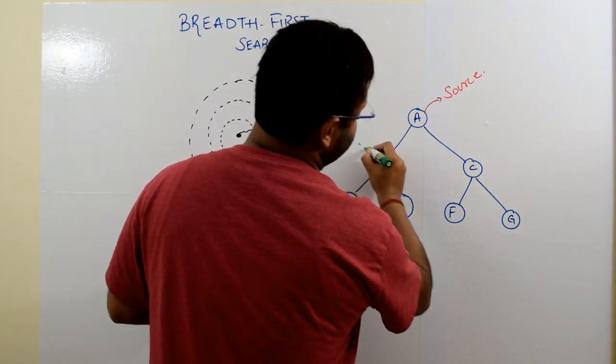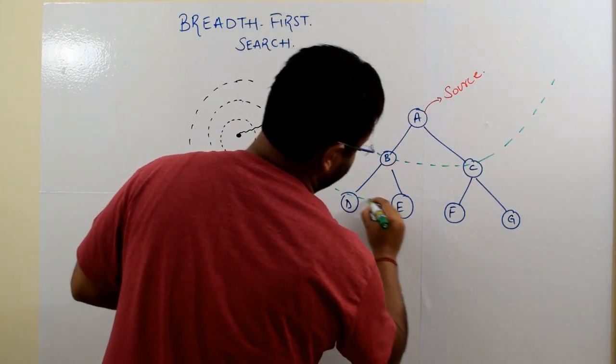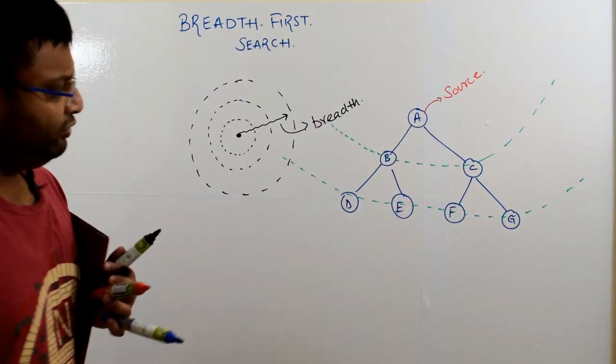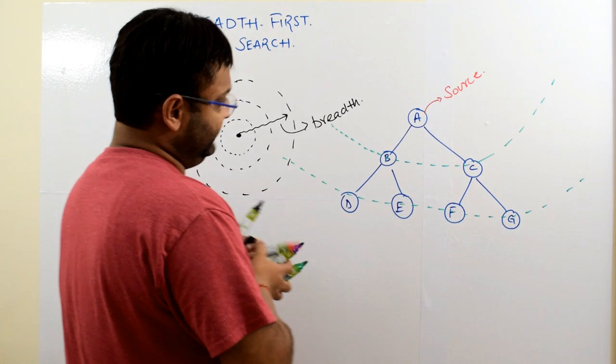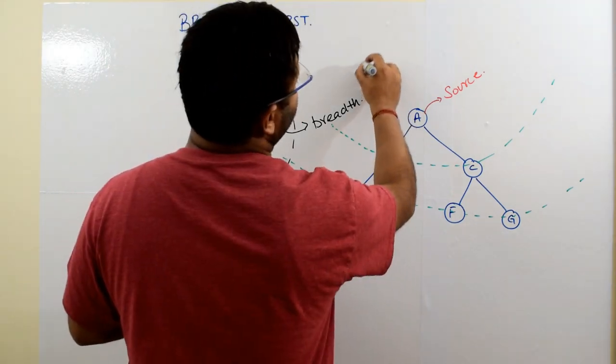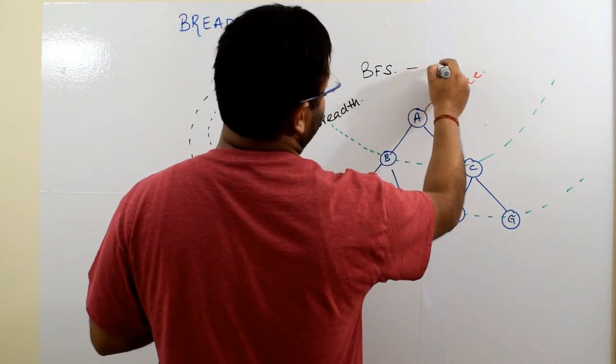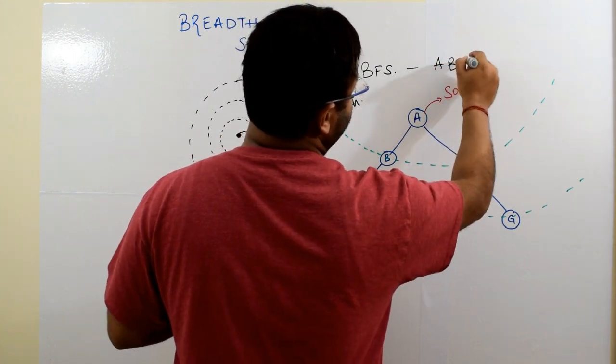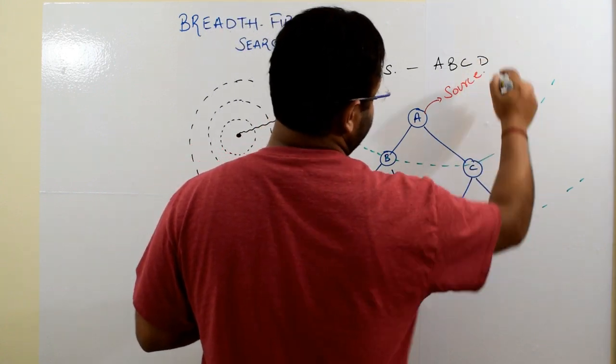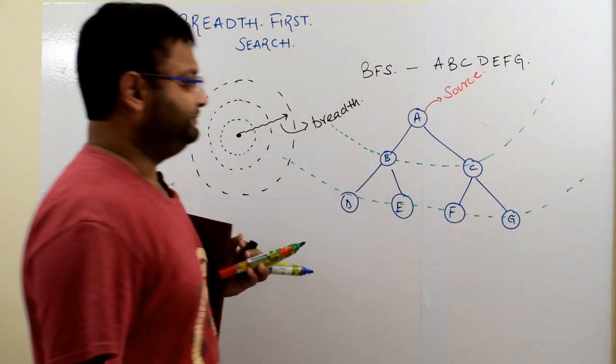Something like this and then like this. So your answer would be something like that. The BFS traversal of this very simple graph, which is also a simple binary tree, is nothing but A, then B and C, then D, E, F, and G.